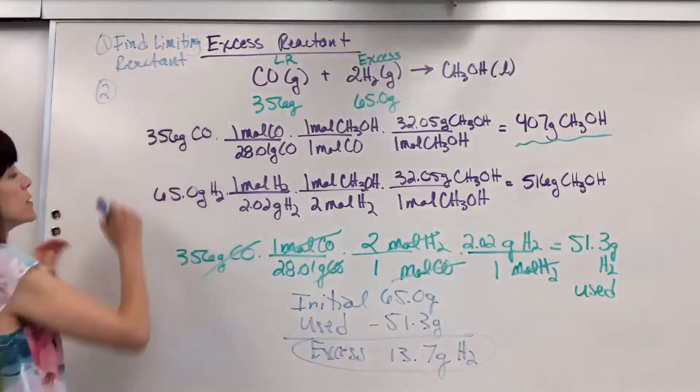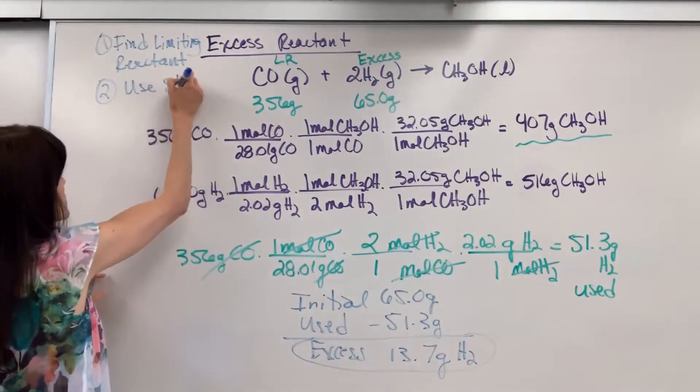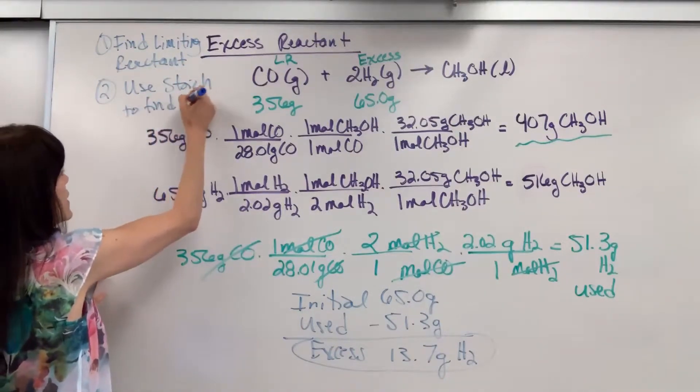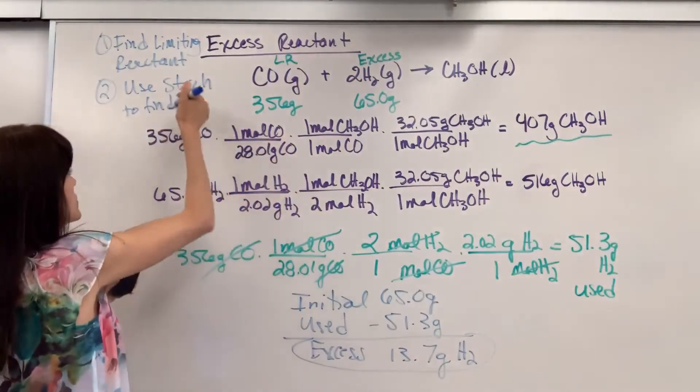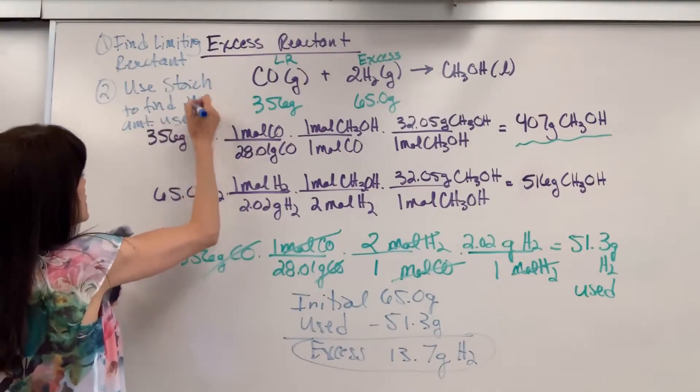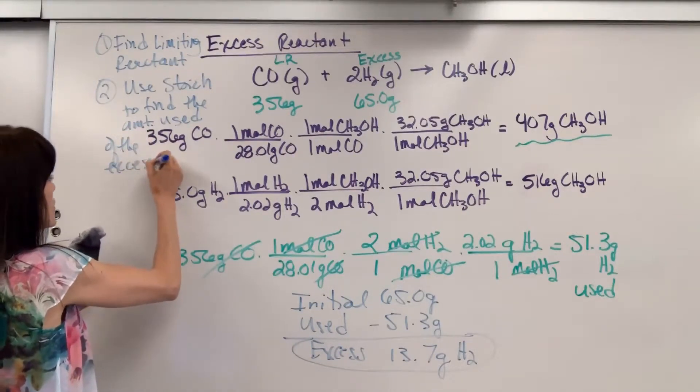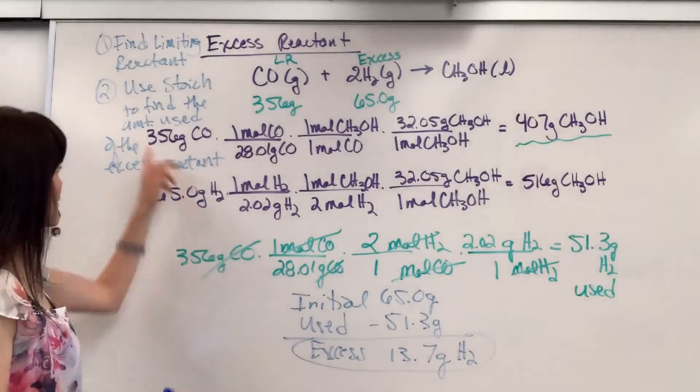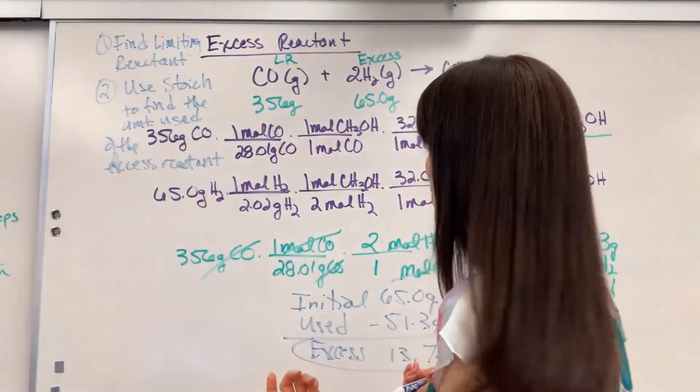Number two, you're going to use stoichiometry to find the amount used of the excess reactant. So first you find the limiting reactant, which tells you by default what's the excess reactant.